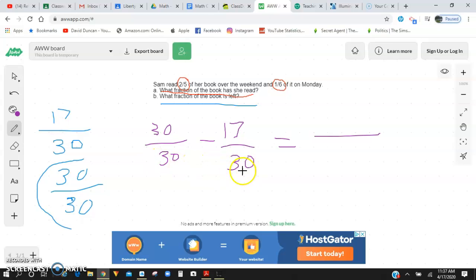Now I don't need to do butterfly method because my denominators are the same here. My denominators are equivalent. They're the same. So I can just bring over that denominator 30. And now I can do 30 minus 17. 30 minus 17 is going to get me 13.